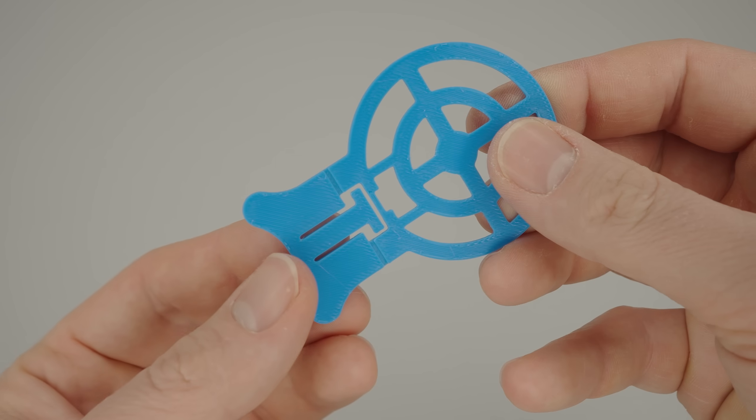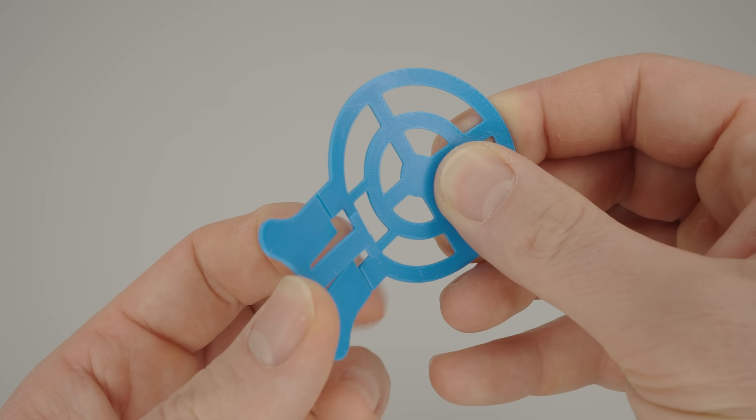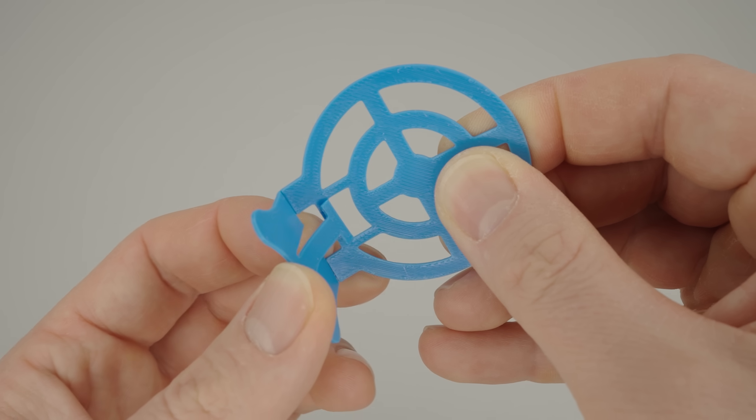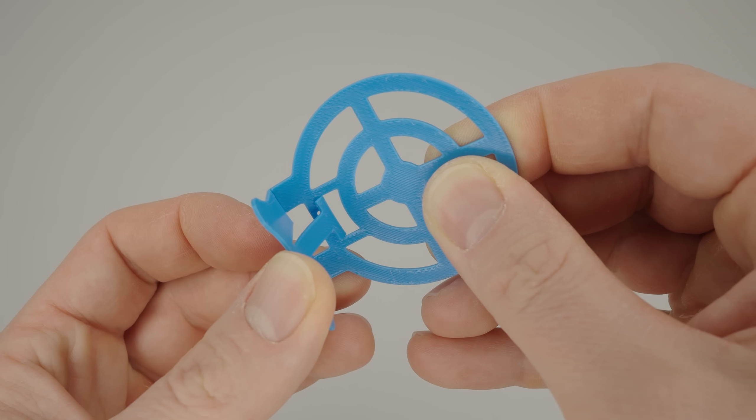Then, just fold the base while pushing the tab upwards. This tab needs to go into the slot. When the base is bent to 90 degrees, the tab should snap securely into place.